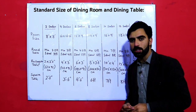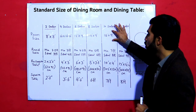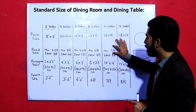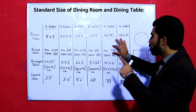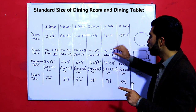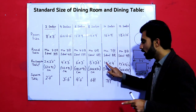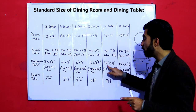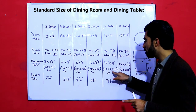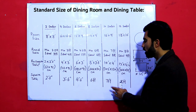For ten sitters, the dining room size should be sixteen by nine feet. The minimum round table should be seven feet and the ideal is eight feet. For a rectangular table, the size is ten by four feet, or 305 by 120 centimeters. For a square table, it should be seven by seven feet.